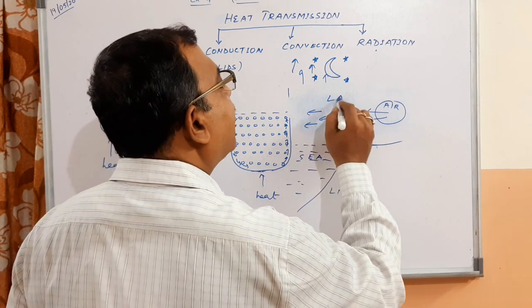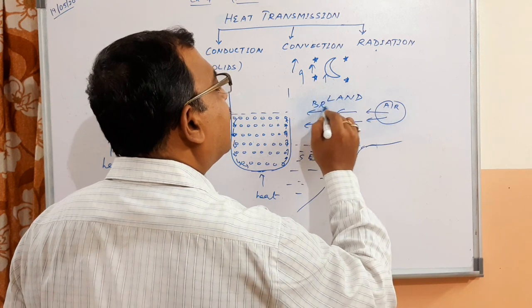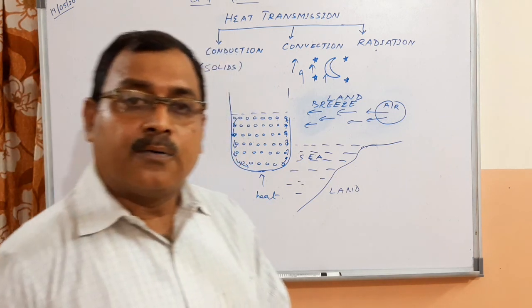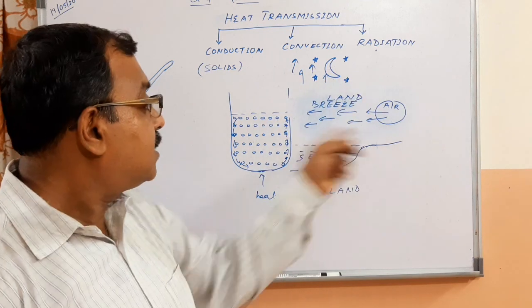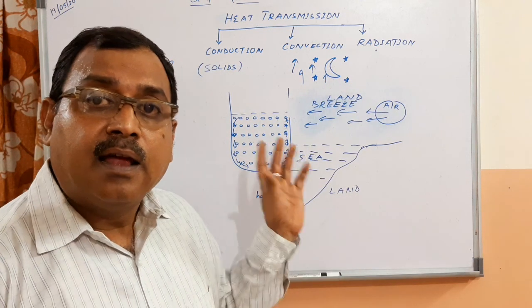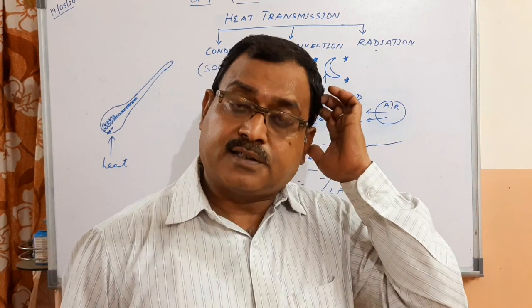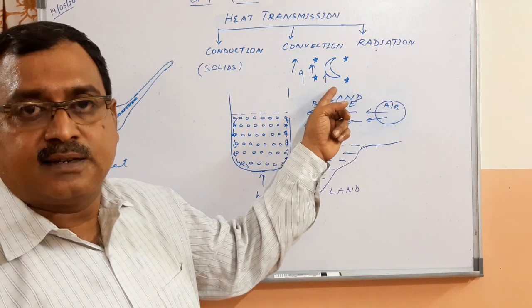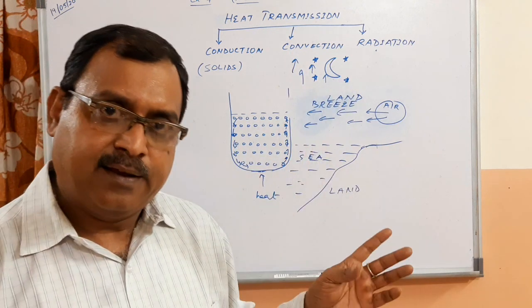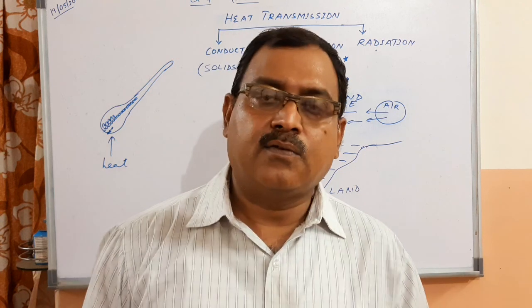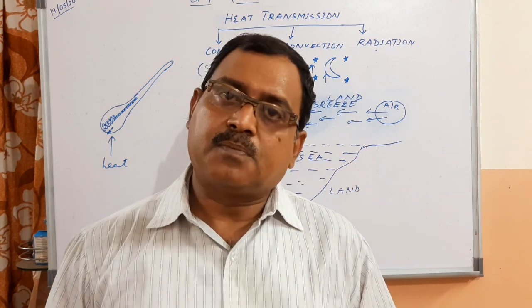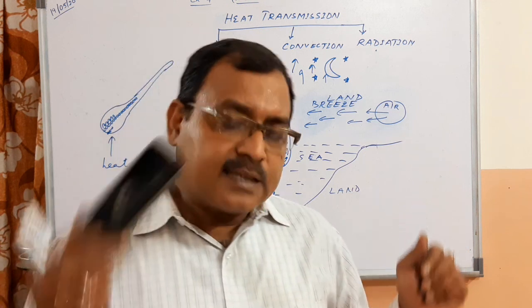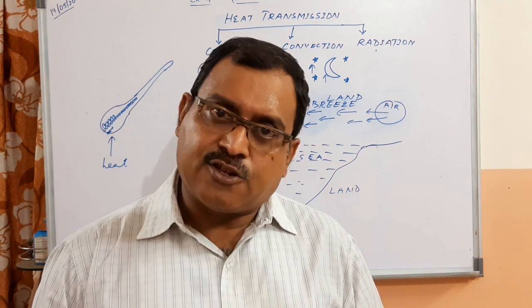This is called land breeze. Again, you can see a convection current is set up. In coastal regions, land breeze and sea breeze occur this way. Remember: land breeze takes place during the night, whereas sea breeze occurs during the day. This is a natural phenomenon which follows the principles of physics. In our next class we will do radiation. Thank you.